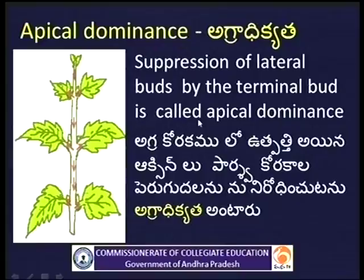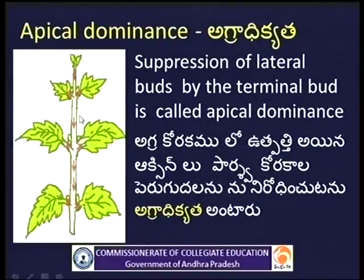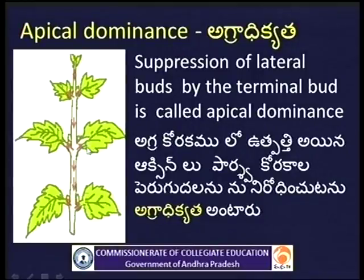Apical dominance: The suppression of the lateral buds by the terminal bud is called apical dominance. The growth of the lateral buds is inhibited by the terminal bud.